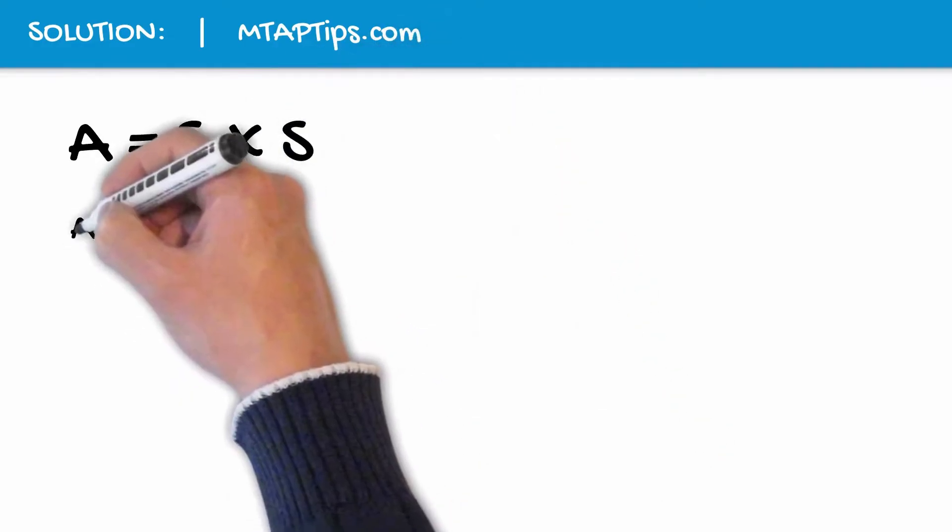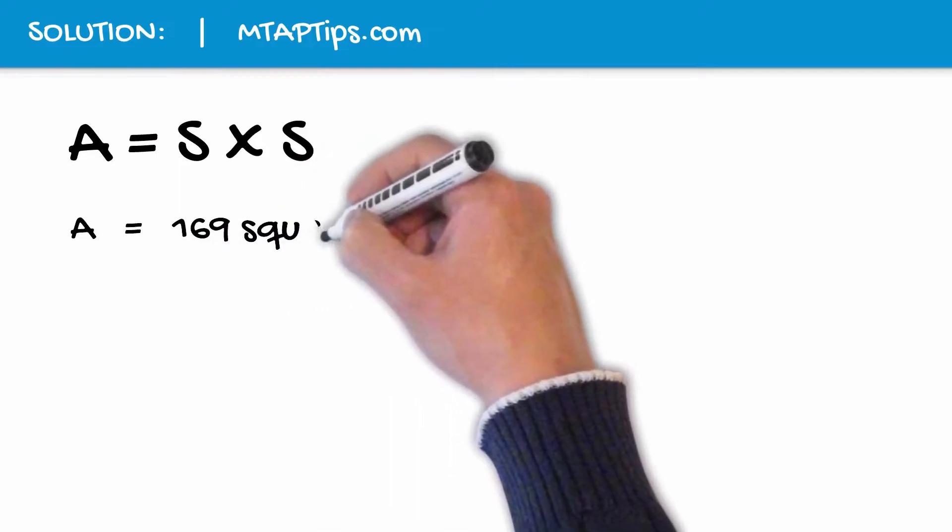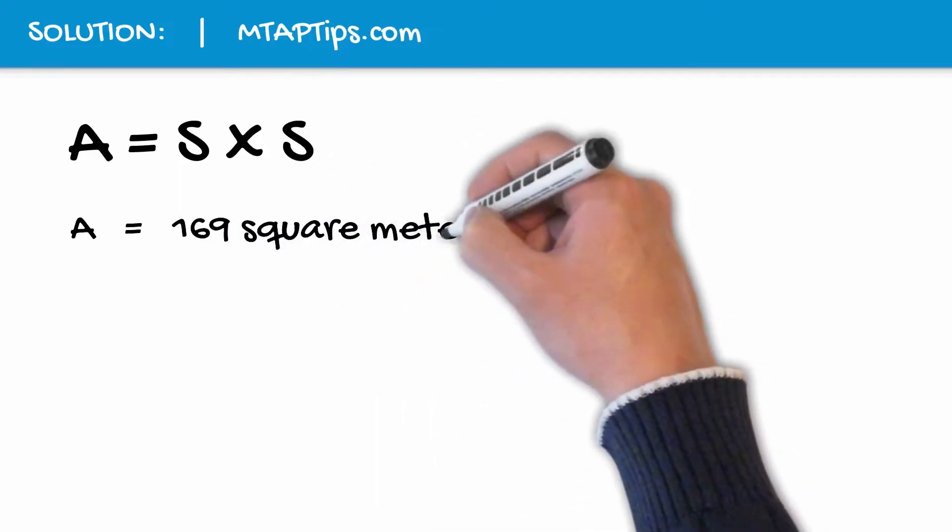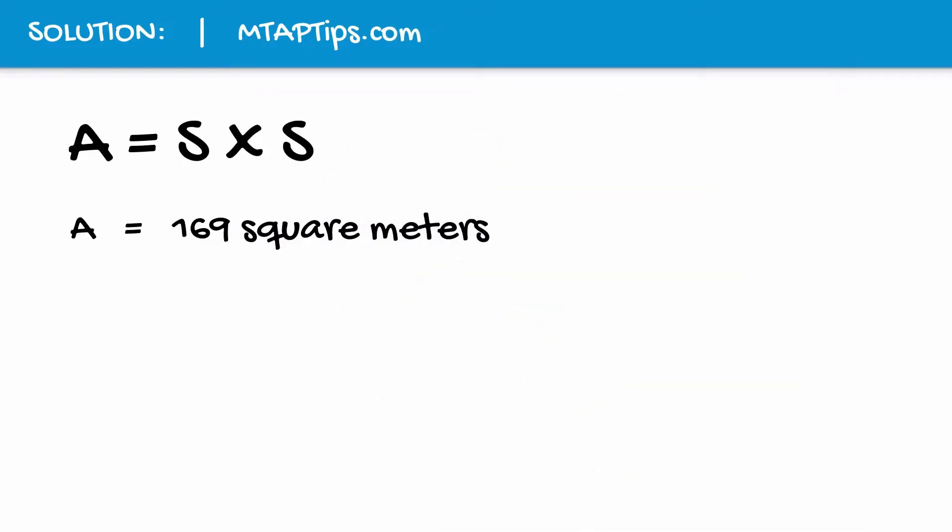Now if the area, or A, is equal to 169 square meters, to know the value of S, you just have to think of a number that when you multiply by itself, you'll get a product of 169. Can you guess what number it is?